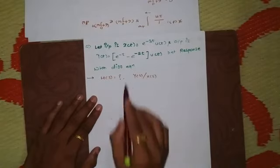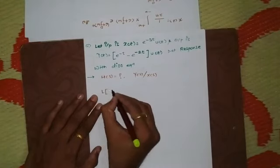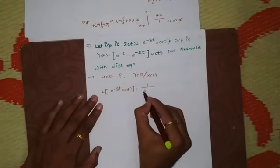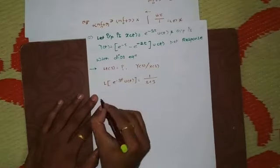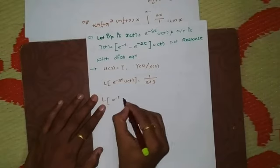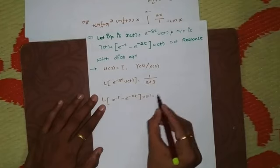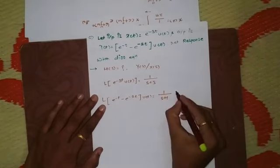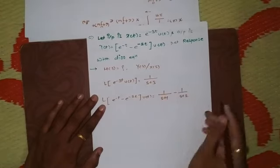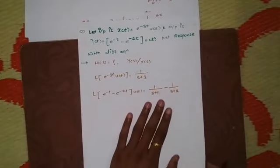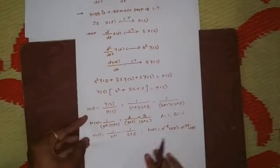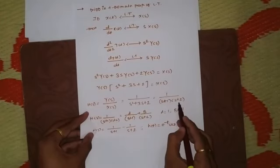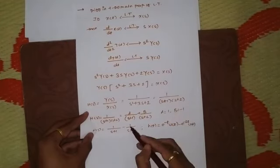We find the Laplace of both functions: Laplace of e^(−3t)·u(t) = 1/(s+3). Laplace of [e^(−t) − e^(−2t)]·u(t) = 1/(s+1) − 1/(s+2), since both are right-sided signals with poles at 1 and 2. Observing this, 1/(s+1) − 1/(s+2) can be written as 1/[(s+1)(s+2)].